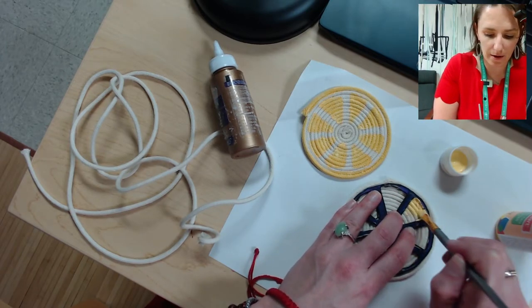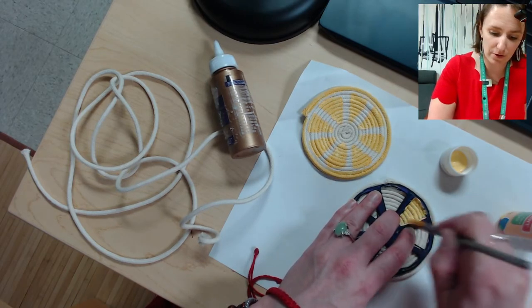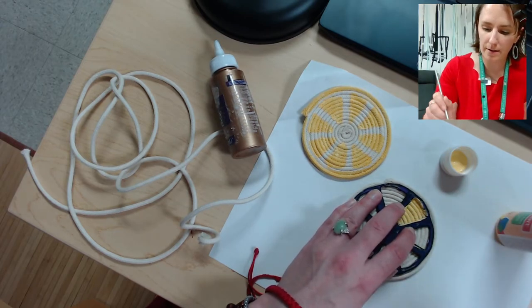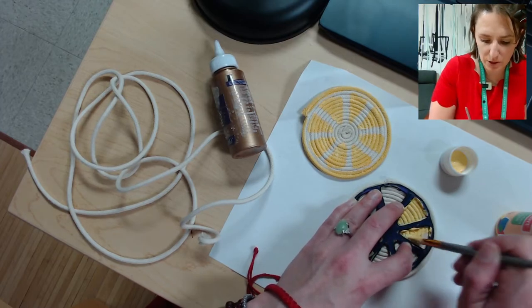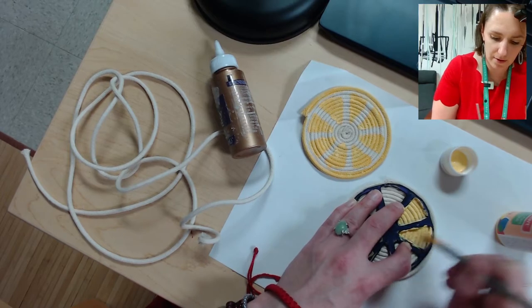So you're going to paint in the first triangle, and then you paint in the second triangle. And make sure, because it's rope, so it's pretty absorbent of the paint, so make sure you get a good layer on there.